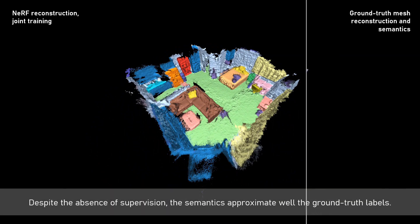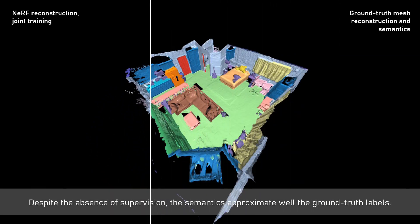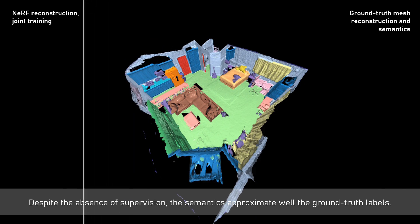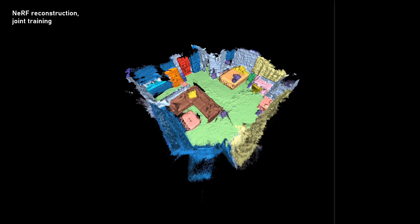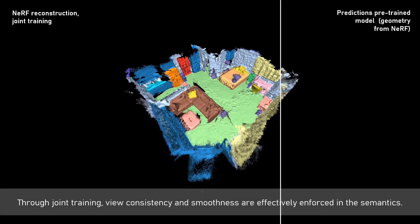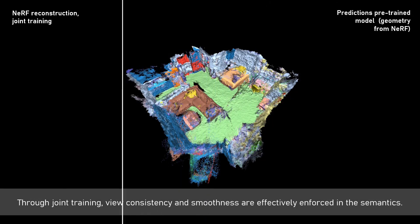Despite the absence of supervision, the semantics approximate well the ground truth labels. In addition, we can see that the view consistency and smoothness are effectively enforced in the semantics.